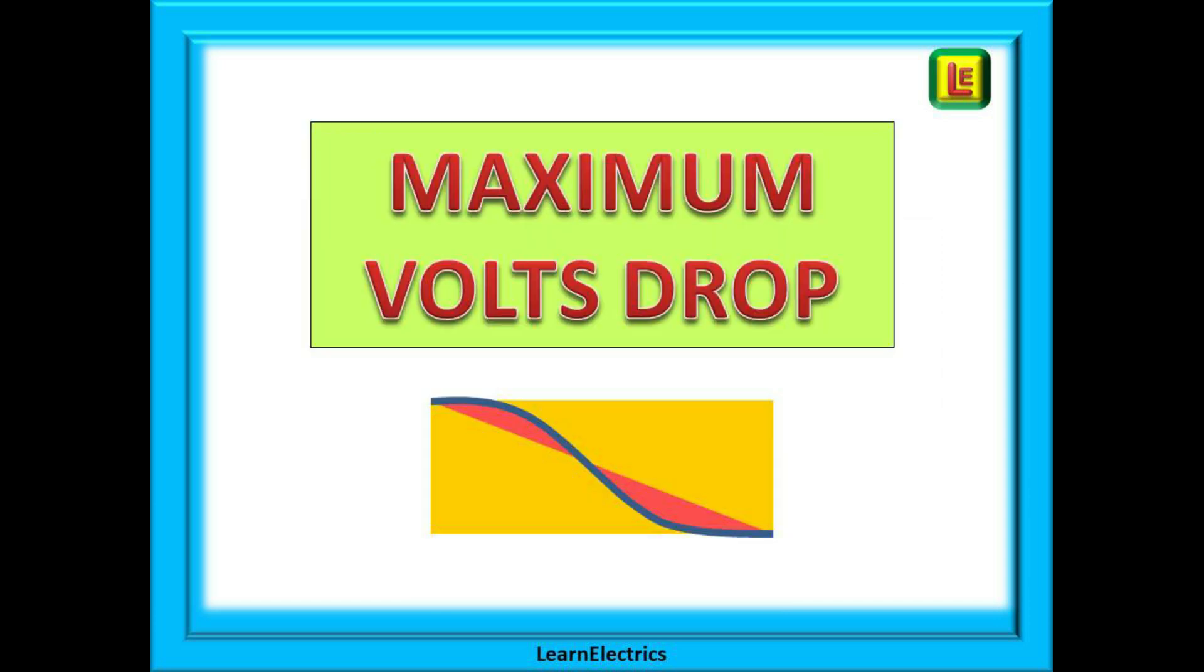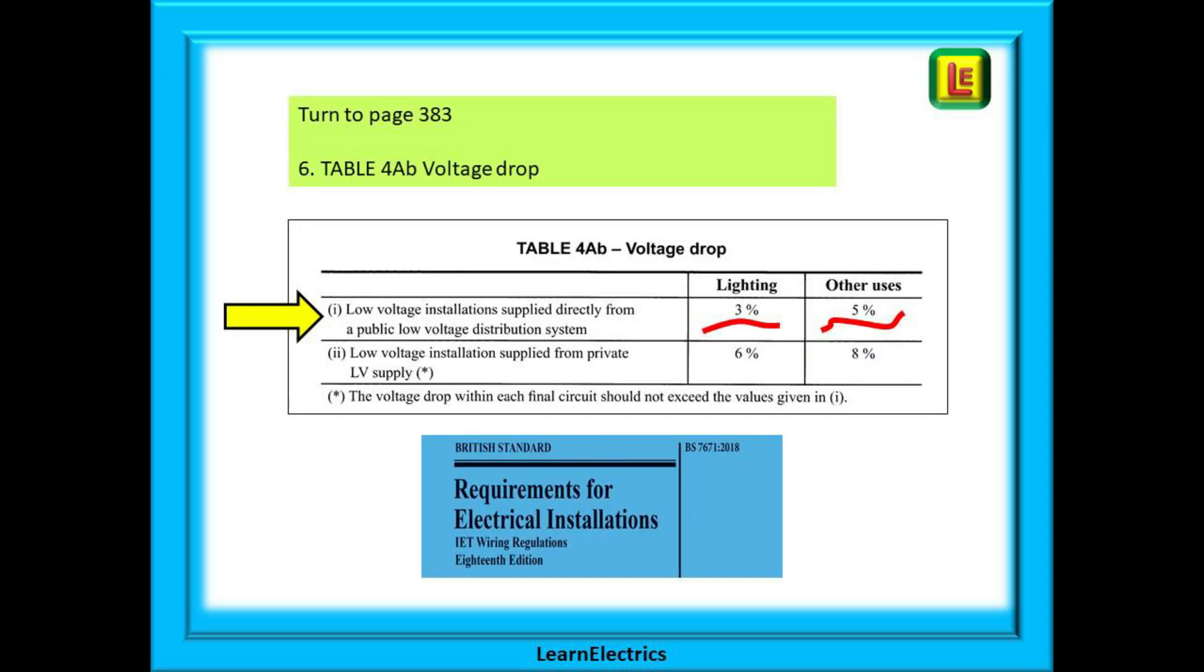Now we have this table, we can find the maximum permitted voltage drop. Table 4AB tells us that a low voltage installation supplied by a public distribution system, in other words the national grid, can have up to three percent voltage drop in a lighting circuit and up to five percent for any other circuit: the shower, the cooker, sockets, water heater, and so on.